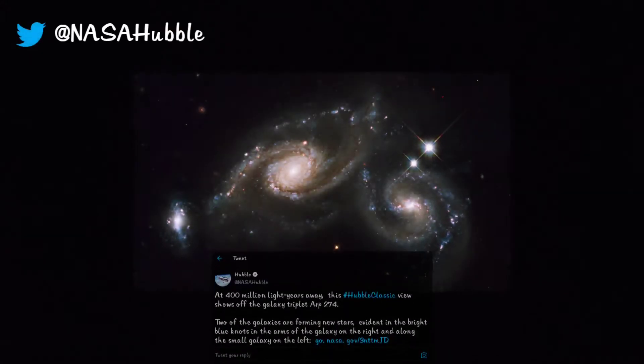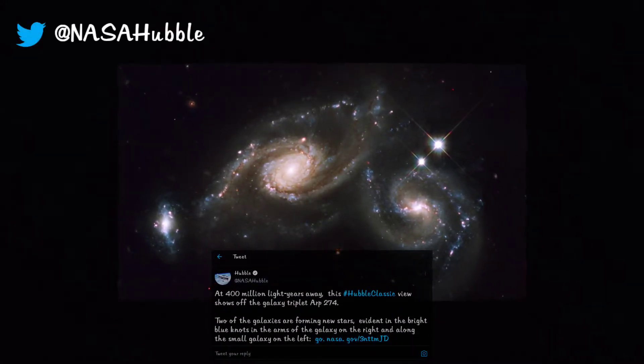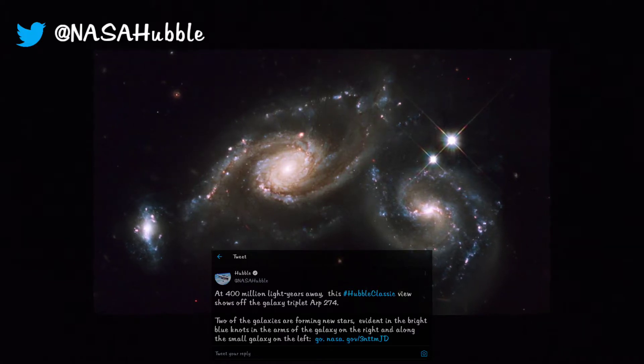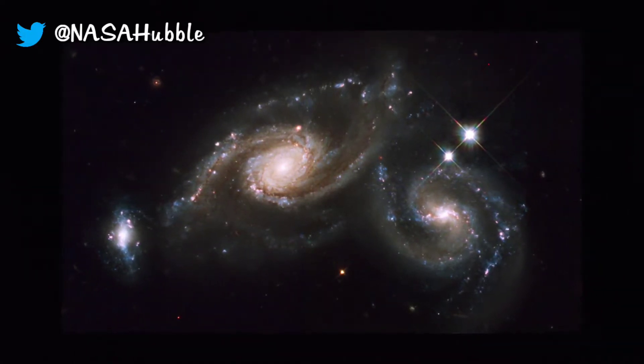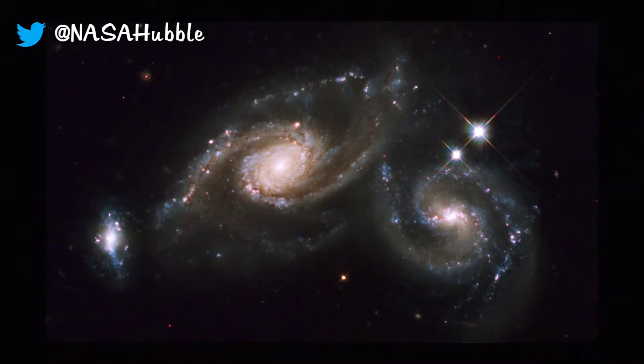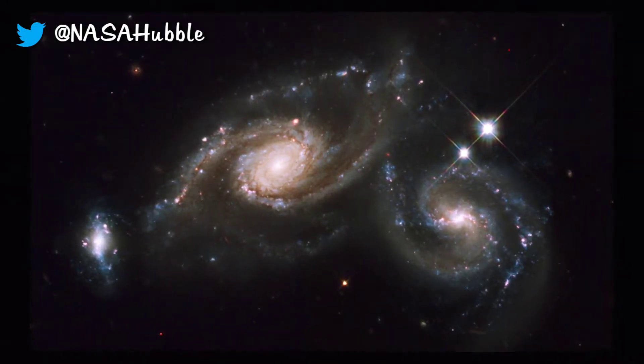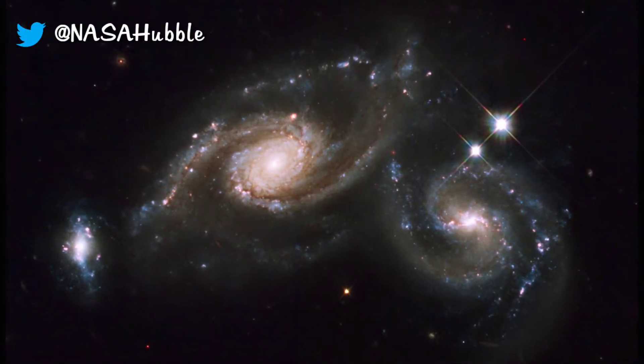These triplets, two large galaxies and one small on the left, seem to overlap but are actually distant from each other. At 400 million light years, this system, ARP 274, located in the constellation Virgo, was captured using Wide Field Camera 2 on Hubble. Read about the color codes of this image in the link below.